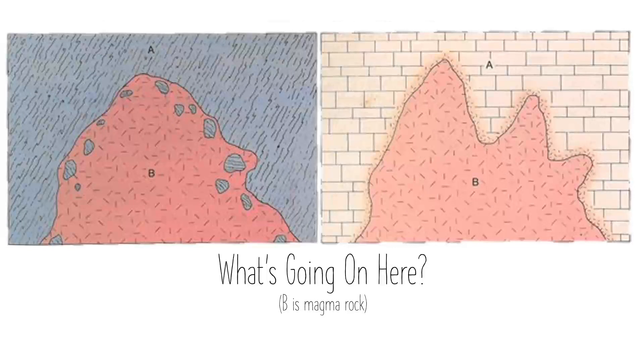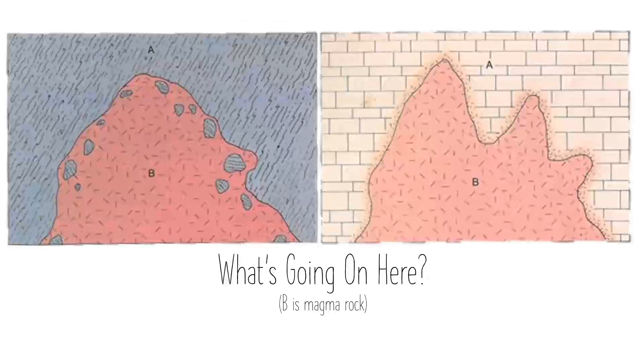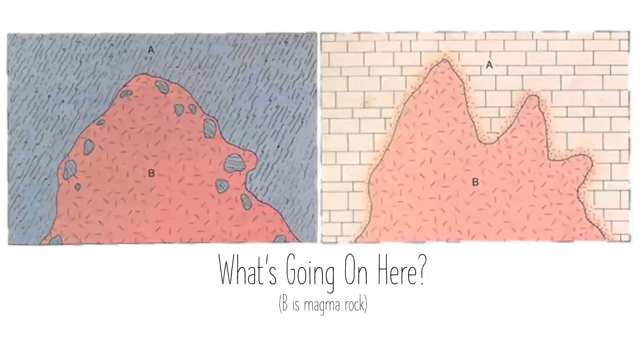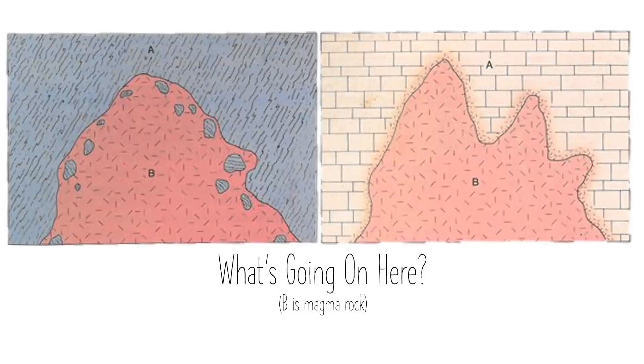Now in the second scenario, we have magma at the surface of the earth piling up and forming a mound which cools into intrusive igneous rock B. And then rock A is eventually deposited and lithifies on top and around it. Now which scenario makes more sense to you based on what you know about intrusive igneous rocks, sedimentary rocks, and really the world in general?